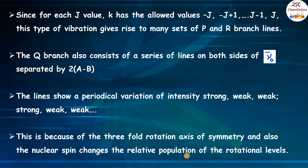When a molecule has a twofold axis of symmetry, the intensity periodicity varies as strong, weak, strong, weak, etc. — twofold periodicity. Similarly, if the molecule has a threefold axis of symmetry, the intensity varies threefold: strong, weak, weak, strong, weak, weak, etc. This type of intensity variation can be seen in the spectra of symmetric top molecules like CH₃I, CH₃Cl, etc. By examining the variation of intensity of the lines, we can confirm whether the molecule belongs to the linear or symmetric top category.